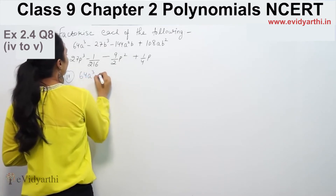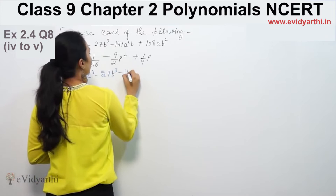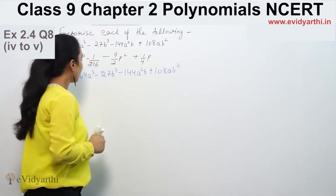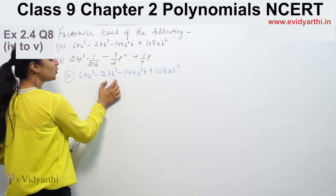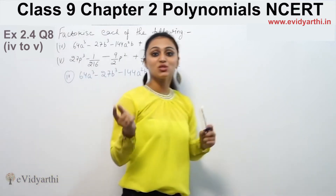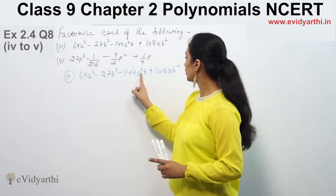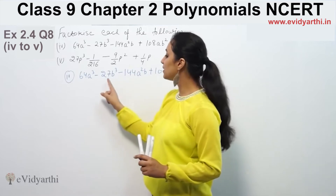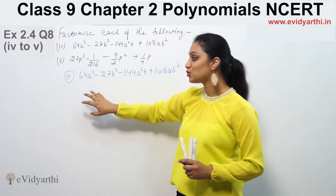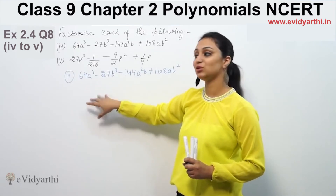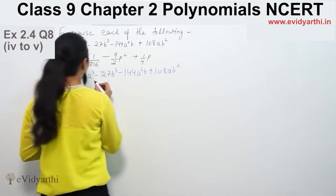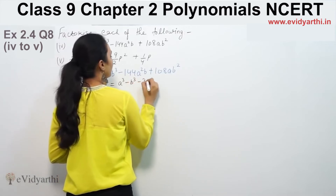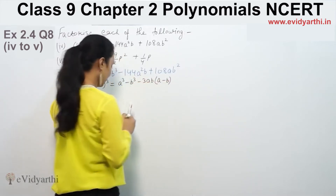We are given 64a³ - 27b³ - 144a²b - 108ab². We recognize this is related to the (a - b)³ identity. Since we have a cube and b cube with a negative sign, we can use the formula (a - b)³ = a³ - b³ - 3a²b + 3ab².